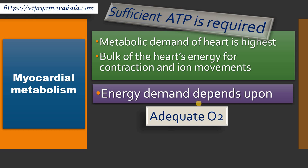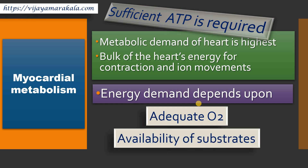If sufficient oxygen is available, then glycolysis would be aerobic glycolysis and it will continue to the TCA cycle and electron transport chain. In the absence of oxygen there is anaerobic glycolysis and it will stop there. Pyruvate will be converted to lactate, and this lactate is transported to the liver where it can be converted to glucose — that is gluconeogenesis. This energy demand also depends upon the availability of various substrates for the production of ATP. We will see what are the different substrates required for myocardial metabolism.